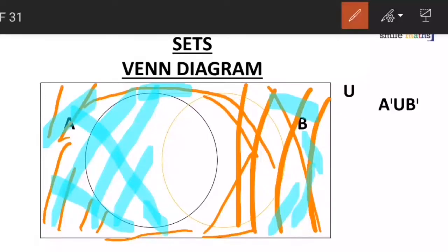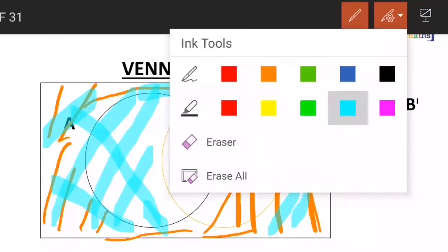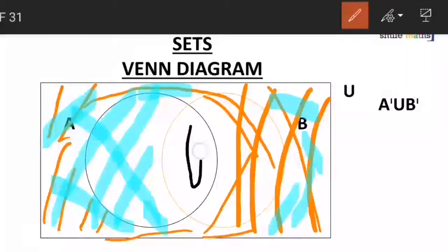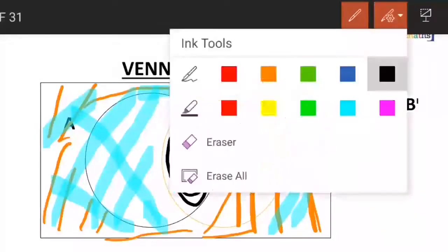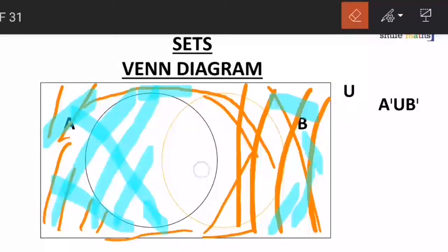If you can see clearly, let me shade that side for us. The side which is going to be shaded is not included. We can see this side was not shaded with the orange, and it wasn't shaded with the blue. So that side is omitted from A complement union B complement — that side is empty.